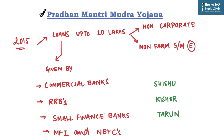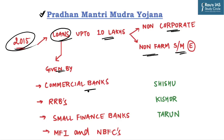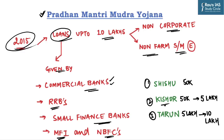Now we will discuss the scheme Pradhan Mantri Mudra Yojana in detail. It was launched in 2015 for providing loans up to 10 lakh rupees to non-corporate and non-farm small and micro enterprises. These loans are given by commercial banks including public and private banks, regional rural banks, small finance banks, microfinance institutions and NBFCs. Under Pradhan Mantri Mudra Yojana, three interventions address the funding needs of beneficiaries: Shishu covers loans up to 50,000 rupees; Kishore covers loans from 50,000 to 5 lakh; and Tarun covers loans from 5 lakh to 10 lakh.